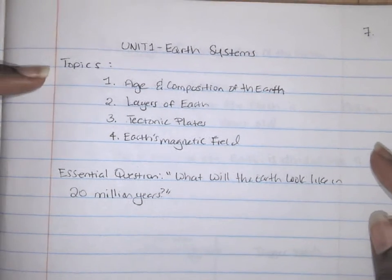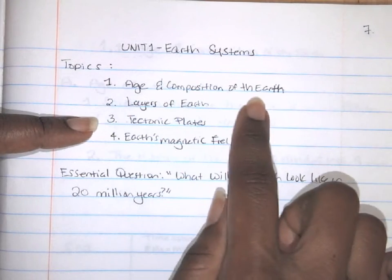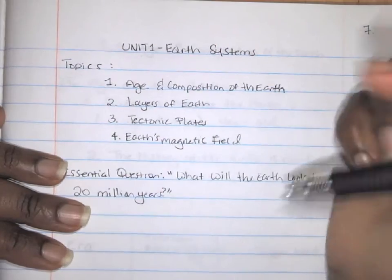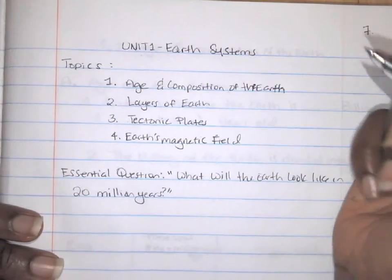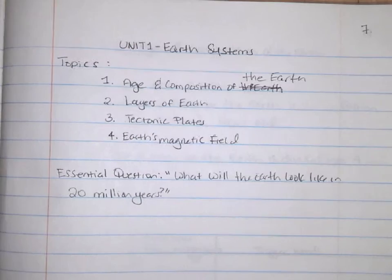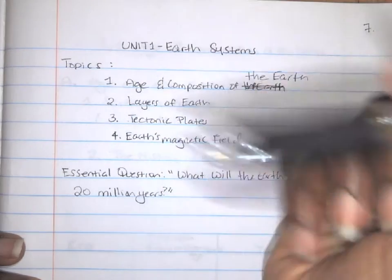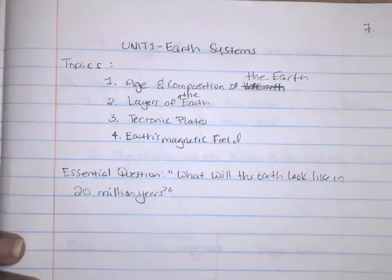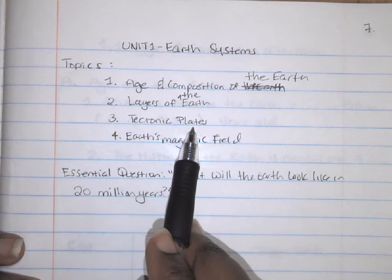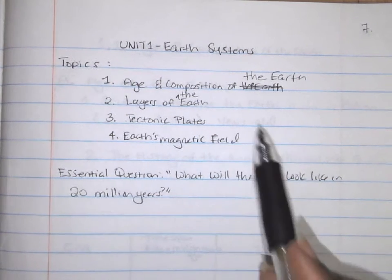Underneath that, we're going to write down the topics. There are four topics in this unit. So write 'Topics' and list them: one, age and composition of the earth; two, layers of the earth; three, tectonic plates; and four, earth's magnetic field. If you need more time to copy this down, pause the video.